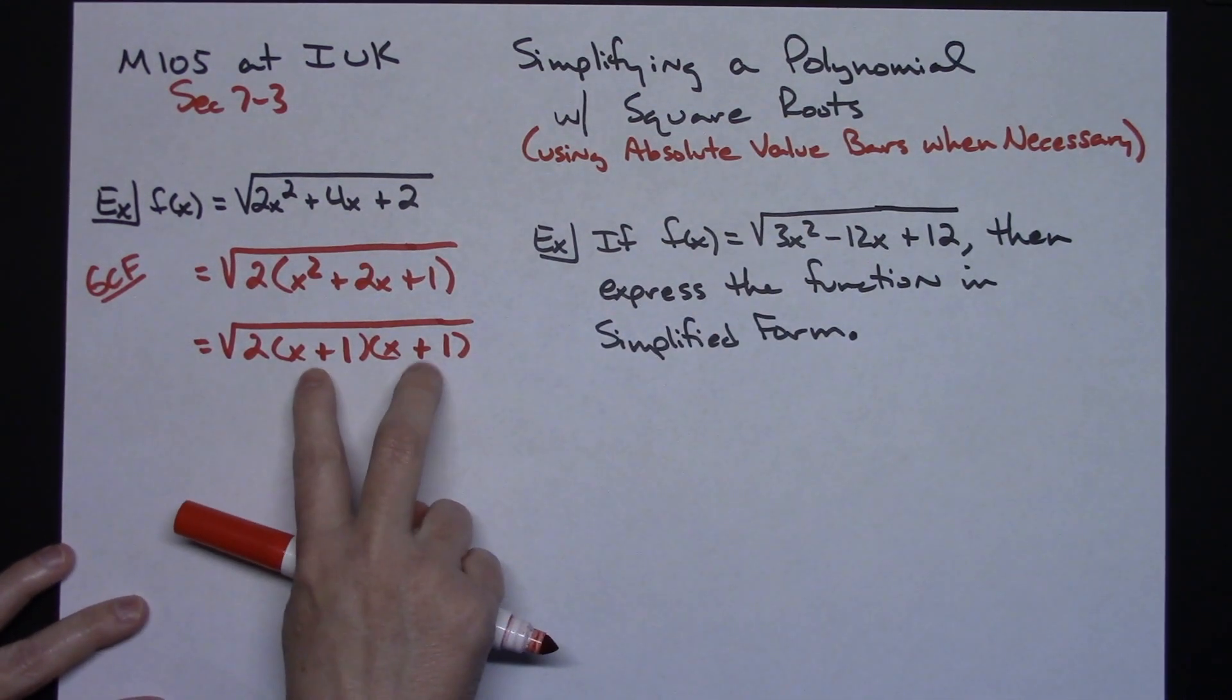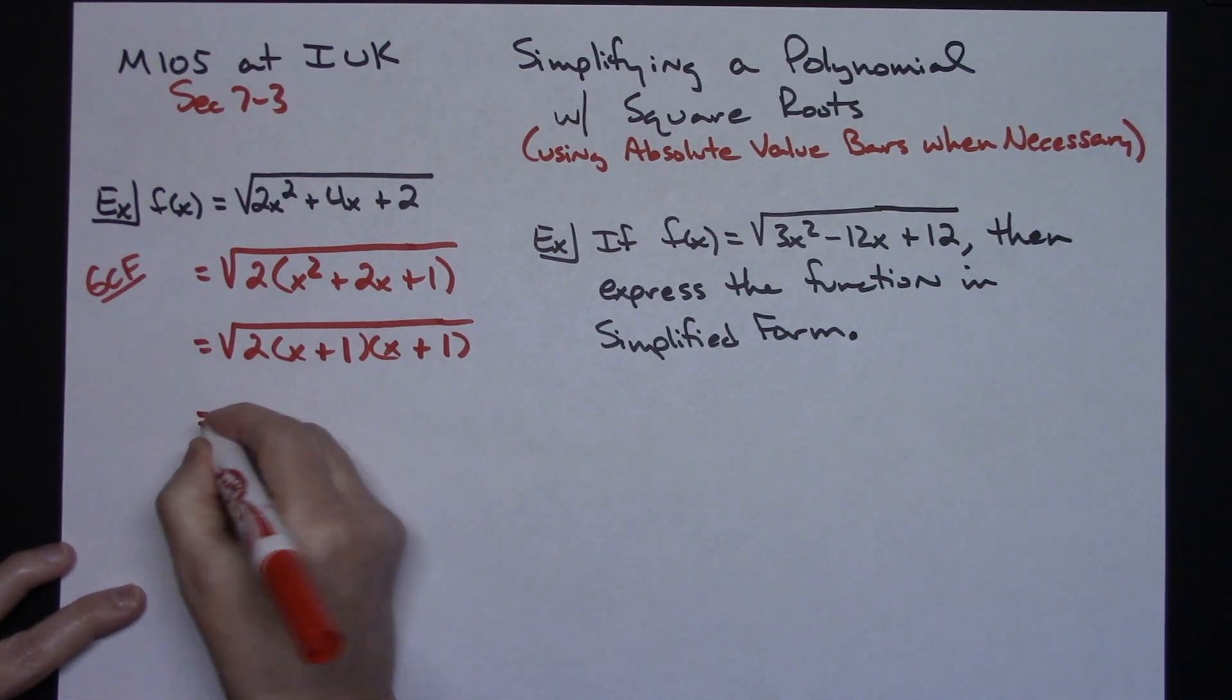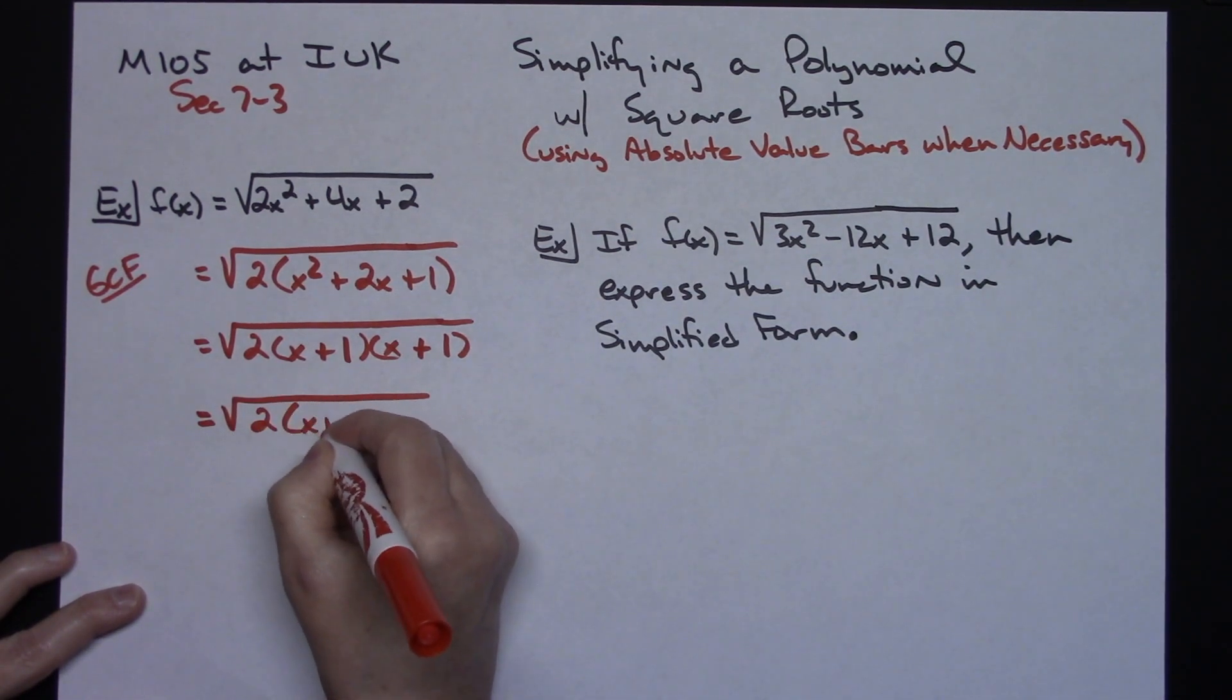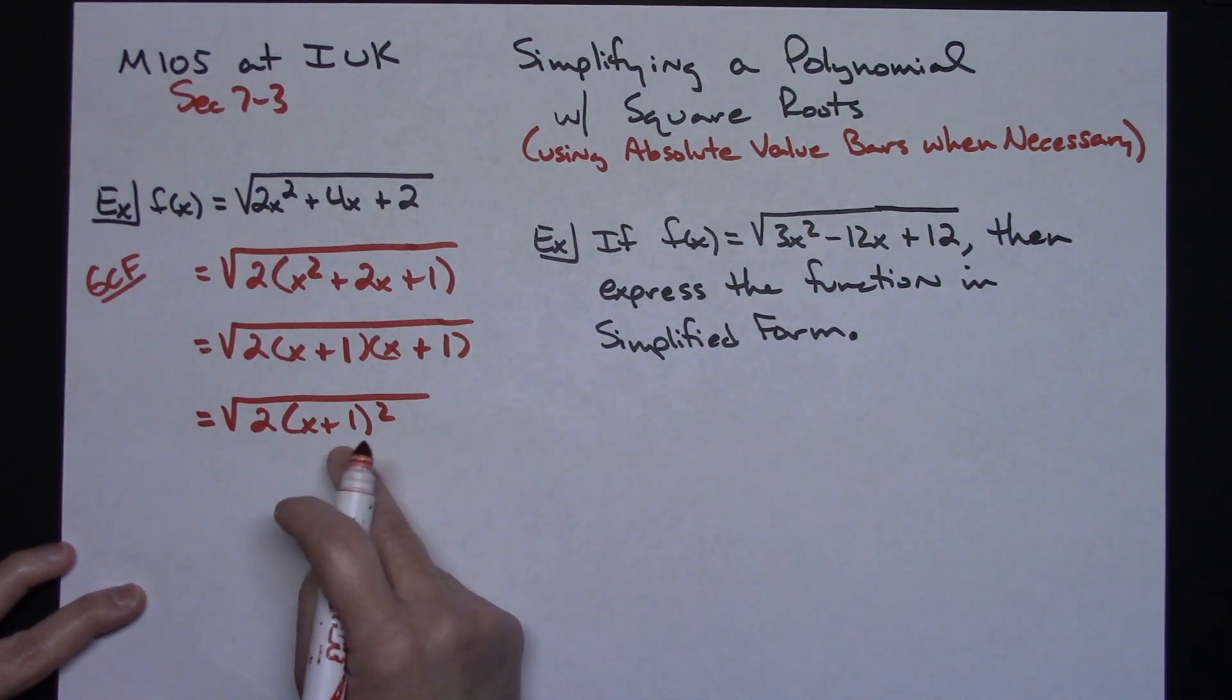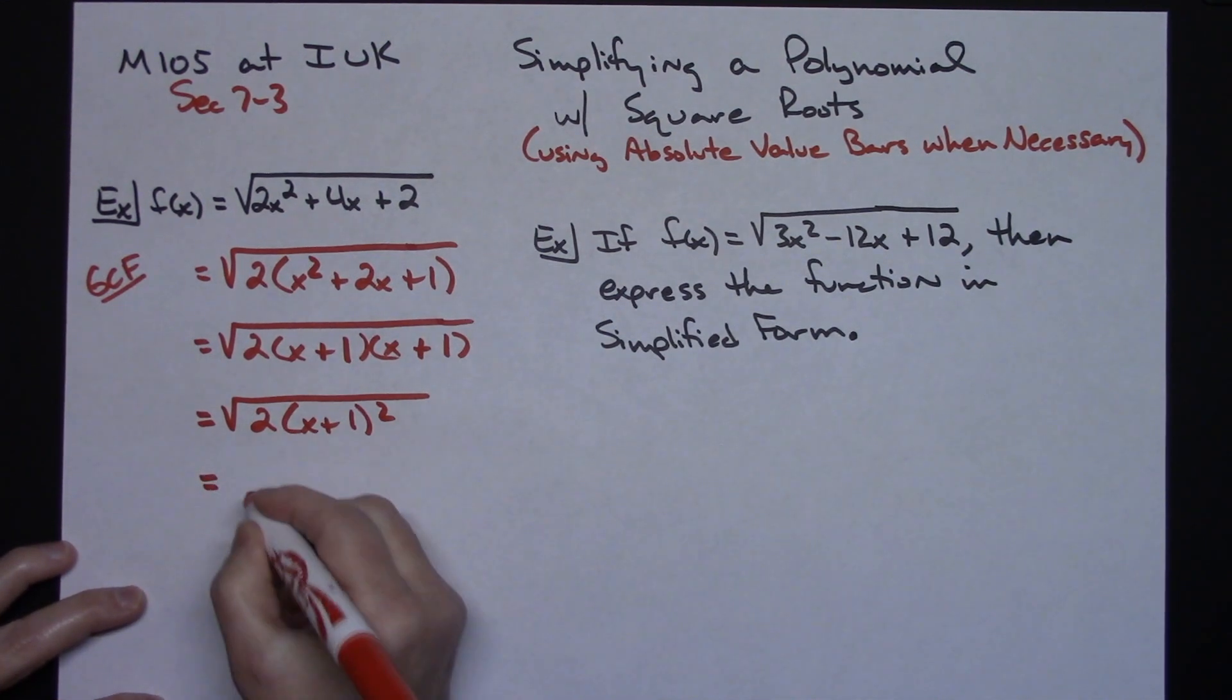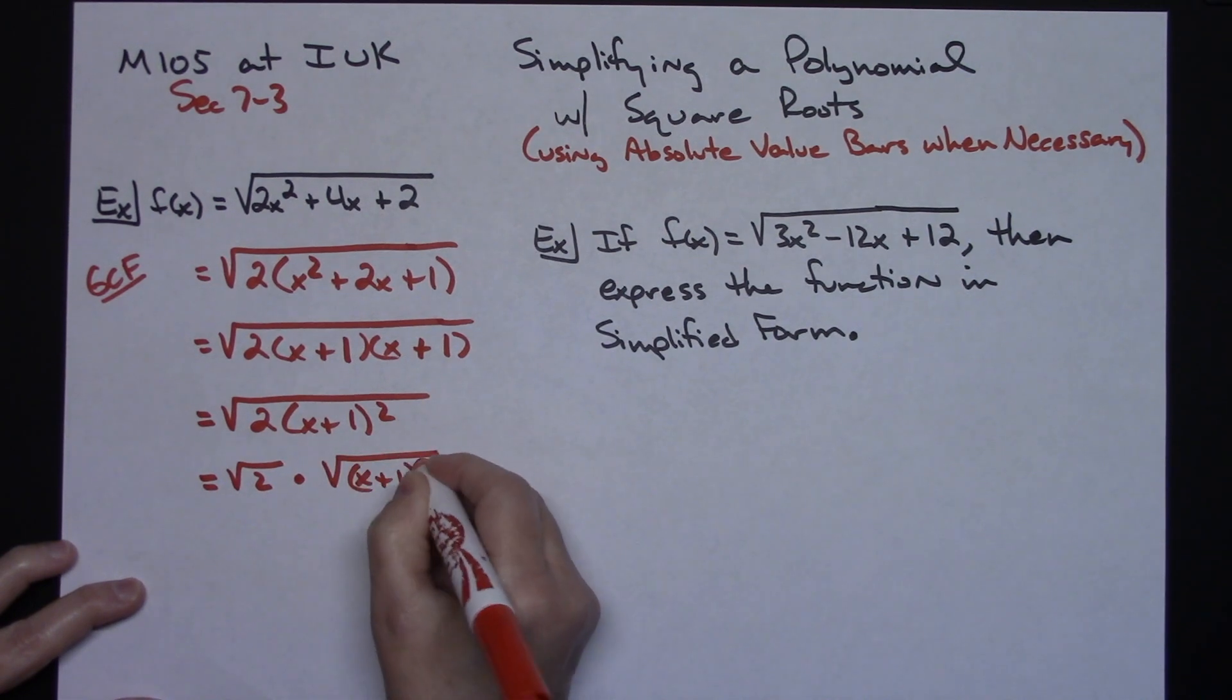Now the fact that I have two of the same factor here, I want to put them together. I think it's going to make simplifying this a little bit easier. 2 times x plus 1 to the second power. Because this now is a perfect square root. And so I'm going to be able to, if I break it up like I have been in my other videos, square root of 2 times the square root of x plus 1 to the second power.